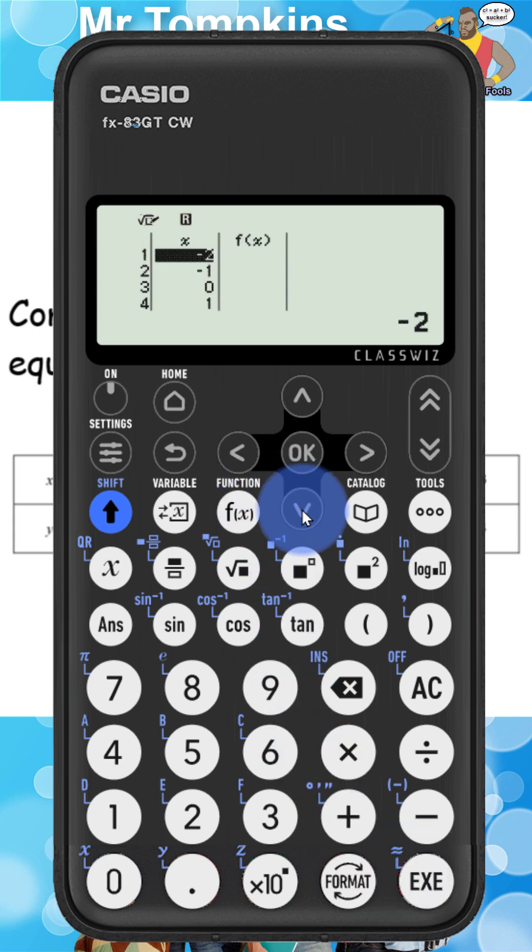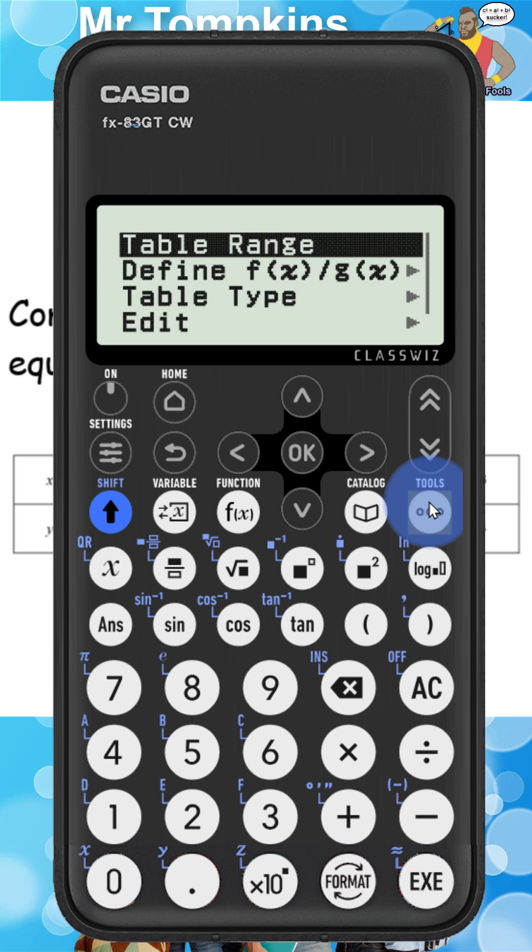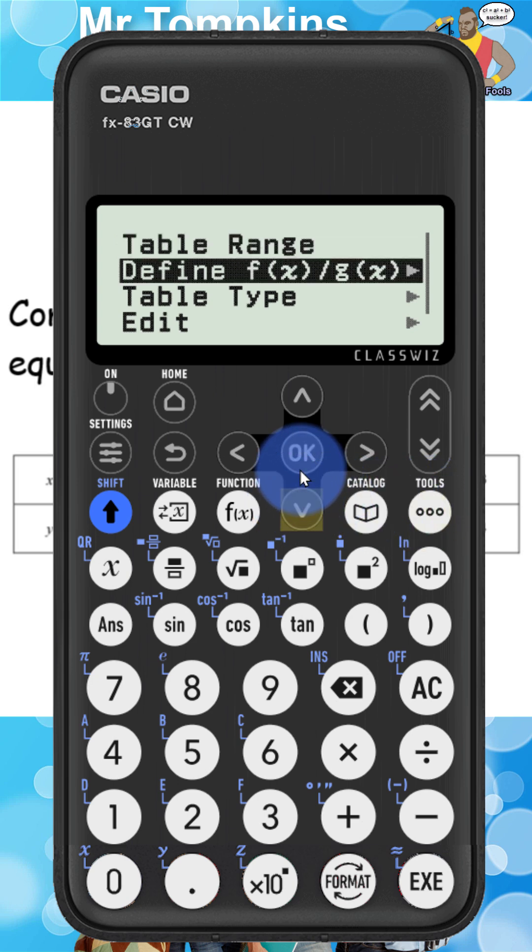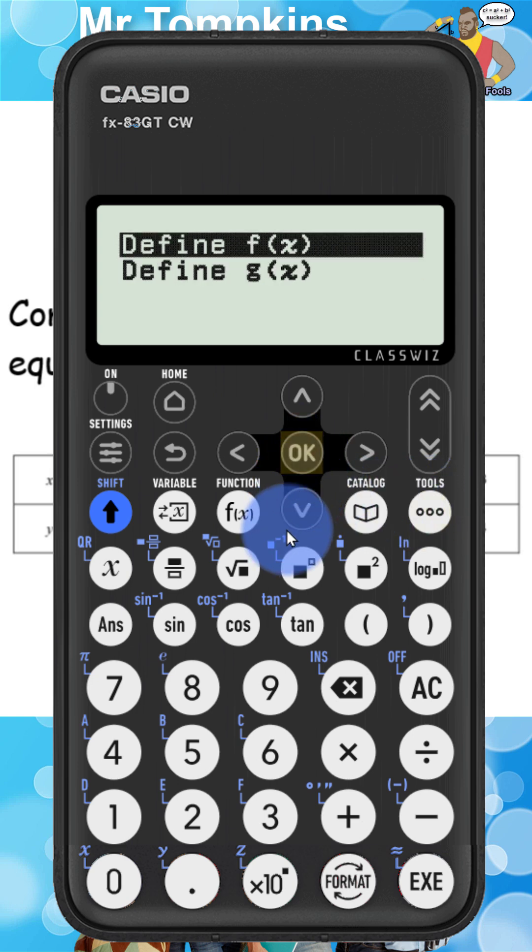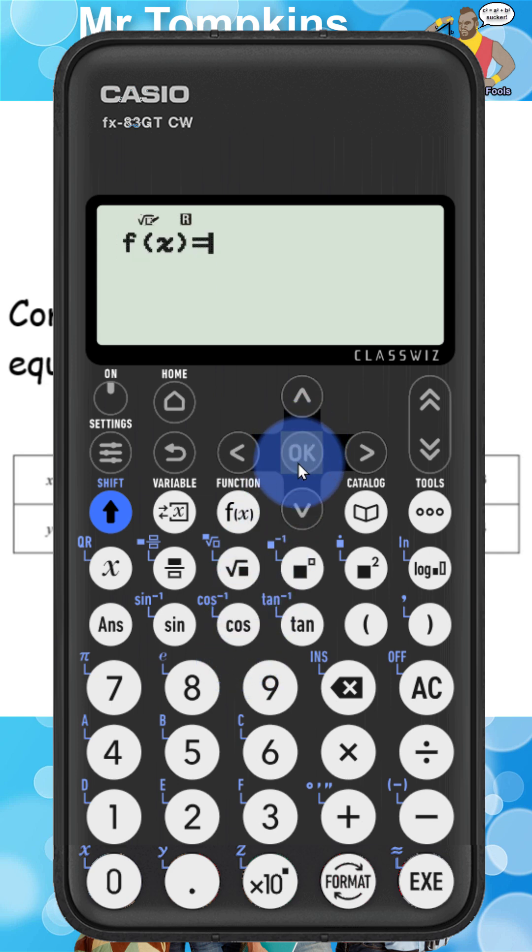Okay you can see it's filled in the x values now for me and now I need to fill in the function so it will calculate the y values for me too. So I'm going to press the tools key again and I'm going to go down and I'm going to select define f of x stroke g of x. So I'm going to press f of x and I'm going to type in the function.